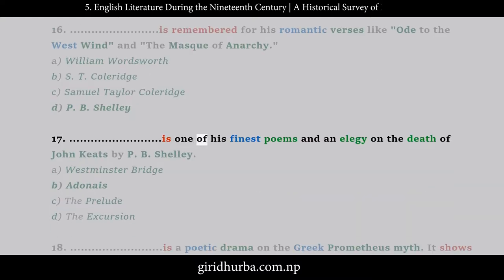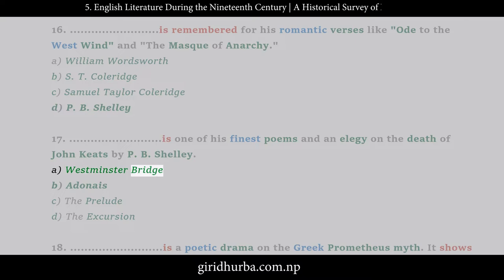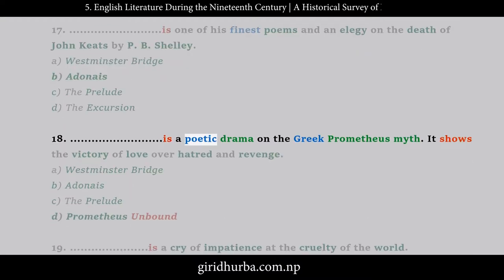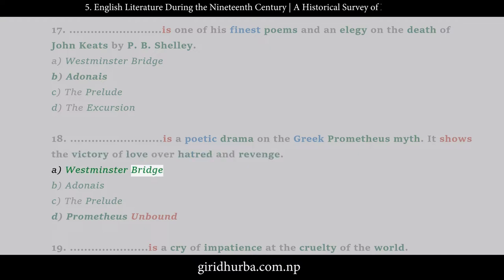Question 16: __ is remembered for his romantic verses like Ode to the West Wind and The Mask of Anarchy. A. William Wordsworth, B. S.T. Coleridge, C. Samuel Taylor Coleridge, D. P.B. Shelley. Question 17: __ is one of his finest poems and an elegy on the death of John Keats by P.B. Shelley. A. Westminster Bridge, B. Adonais, C. The Prelude, D. The Excursion. Question 18: __ is a poetic drama on the Greek Prometheus myth; it shows the victory of love over hatred and revenge. A. Westminster Bridge, B. Adonais, C. The Prelude, D. Prometheus Unbound.